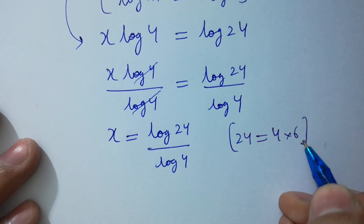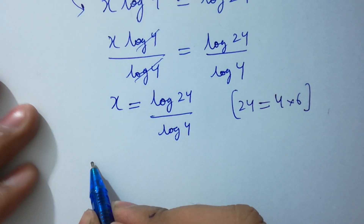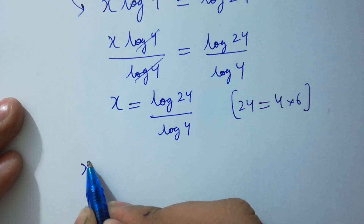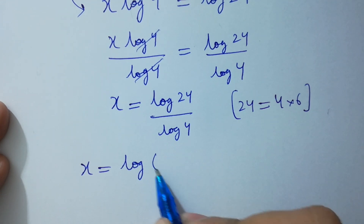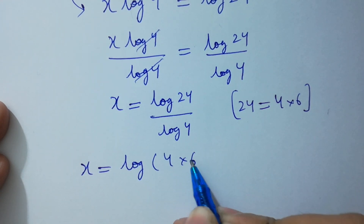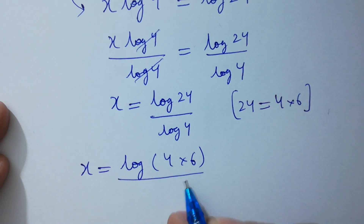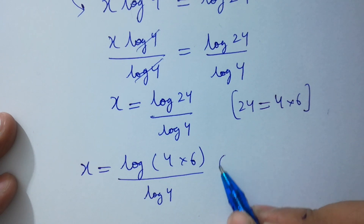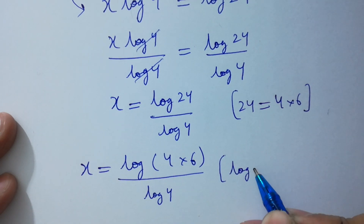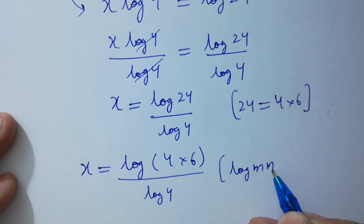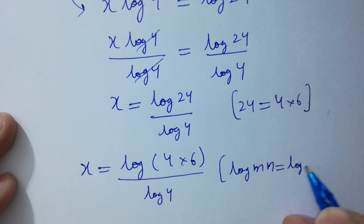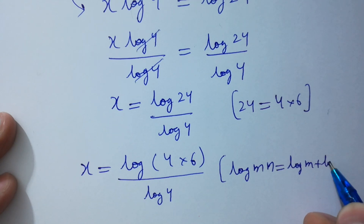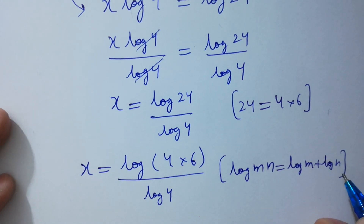Since 24 equals 4 times 6, so x equals log of 4 times 6 divided by log 4. Since log mn equals log m plus log n.